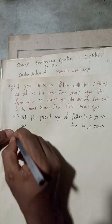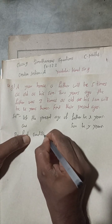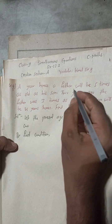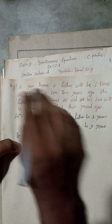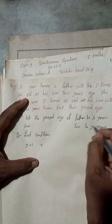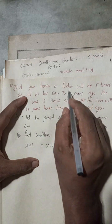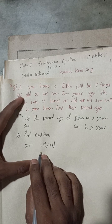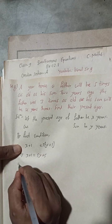By first condition: a year hence means after one year. After one year, father's age will be x plus one because present age is x. So a year hence, father's age will be x plus one. Father will be five times as old as his son. A year hence, the age of son will be y plus one because present age is y. The condition tells that father will be five times, so we multiply this side by five.